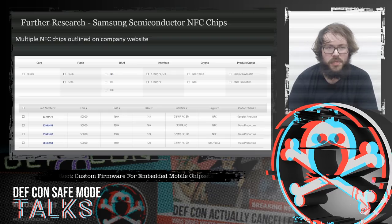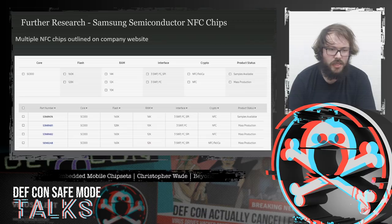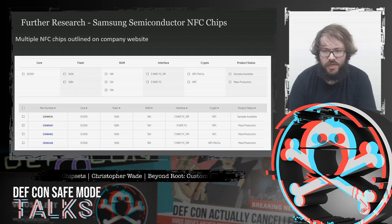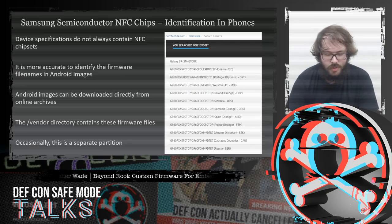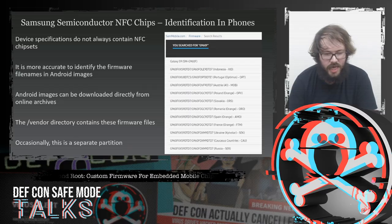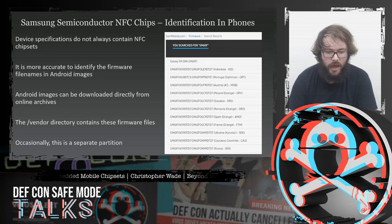I then looked into other NFC chips that Samsung Semiconductor had developed and found four main ones advertised on their website: the S3NRN74, S3NRN81, S3NRN82, and SEN82AB. The most interesting was the S3NRN82 as it seemed like their latest version at the time. I decided to go through the ROMs of many Samsung phones — using sammobile.com, which has a huge number of custom Android ROMs — dumping and extracting them to see what firmware files were in the /vendor partition.